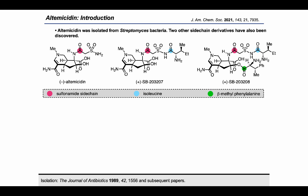Altemicidin is a monoterpene alkaloid with a dense and highly polar aza-indane core. It was isolated in 1989 in a campaign to identify novel insecticidal and acaricidal compounds.